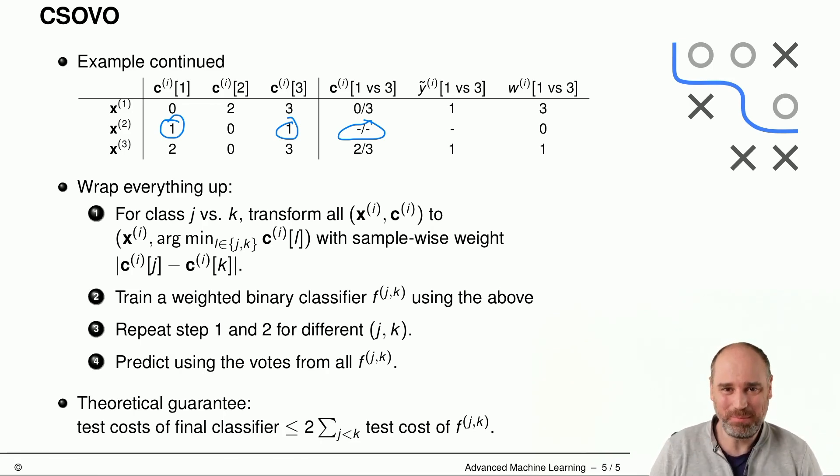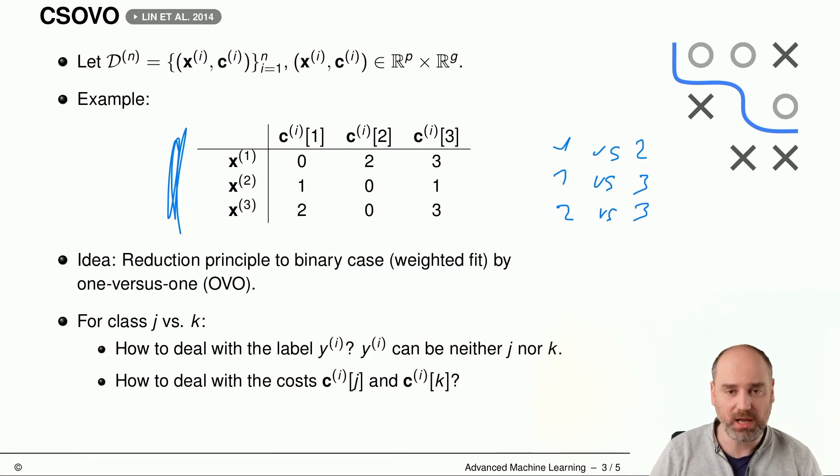It's also a nice homework exercise to implement that. Should be able to do this in one or two pages of Python code. So, try this out. There are, like I said, some theoretical guarantees which are a bit tighter for this binary case. You can also kind of consider this for the multi-class case and get some bound, which is, the test cost of our final classifier is somehow related here, twice being the test cost. So, the sum of the test cost of all of these pair classifiers. But I really do not want to go into the theoretical analysis of these things here. So, there's a good paper by Lin et al., which goes into more the algorithmic aspects of cost-sensitive one versus one. But this also references quite a few of the underpinning theoretical works. So, if you're more interested in these details, please go there. But this concludes the session here. Bye-bye.